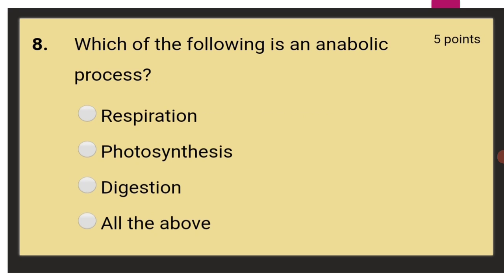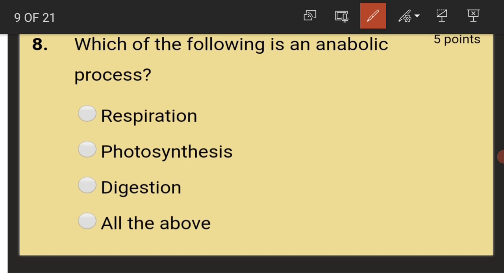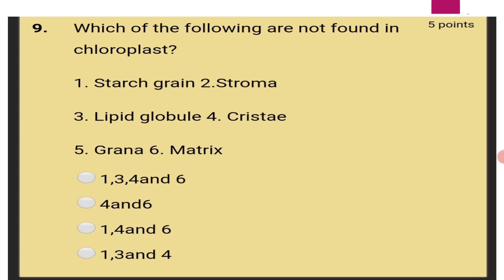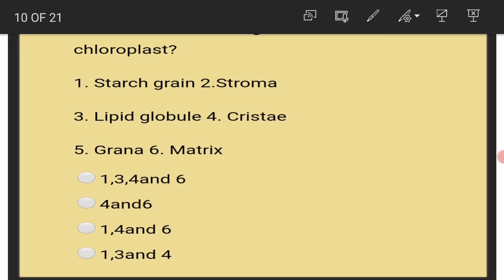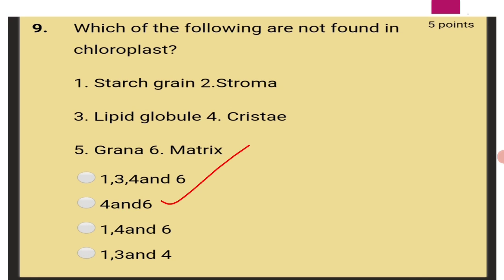Which of the following is an anabolic process? Photosynthesis. Which of the following are not found in chloroplast? Cristae and matrix are not found in chloroplast. That is 4 and 6 are not found in the chloroplast.